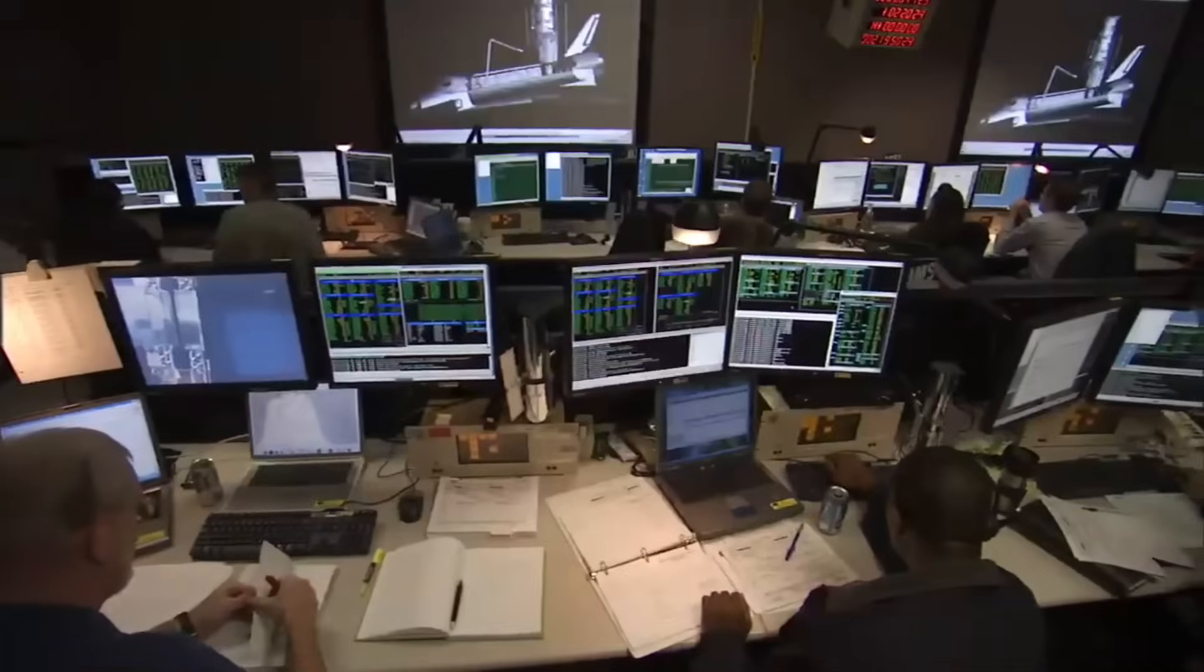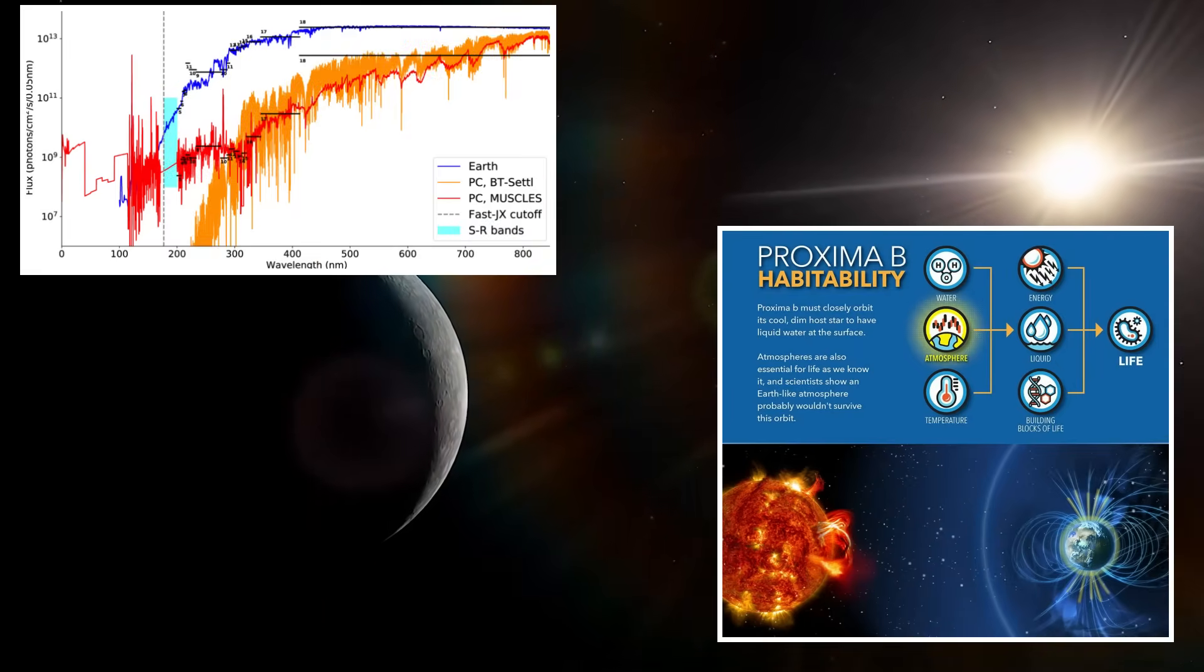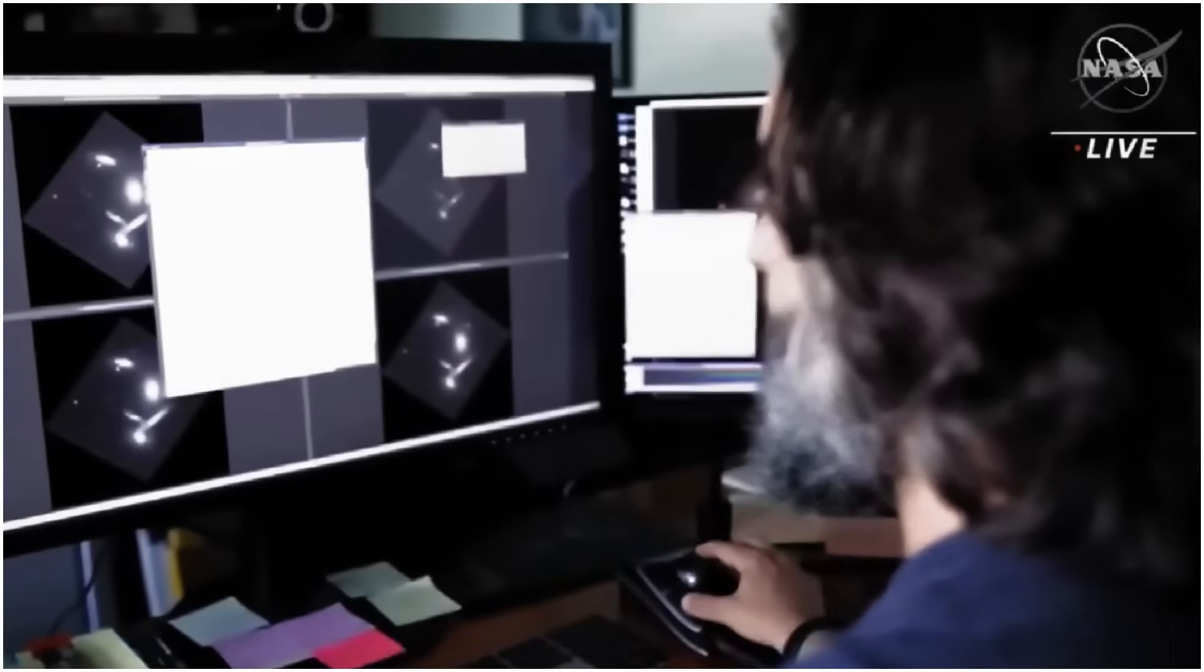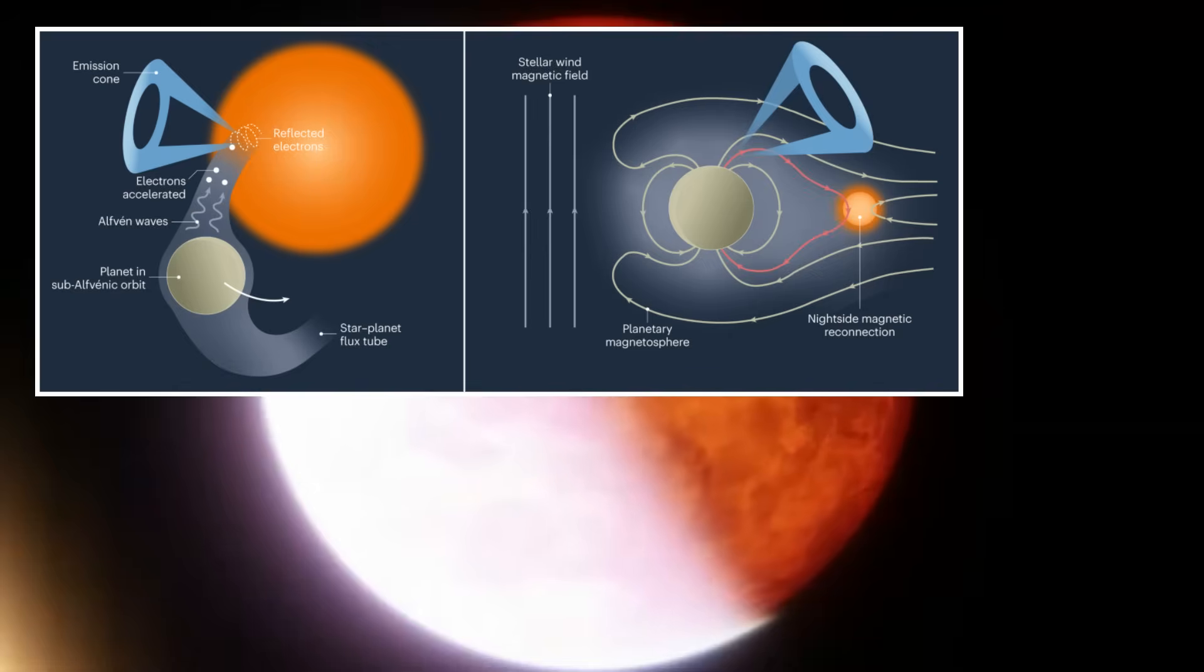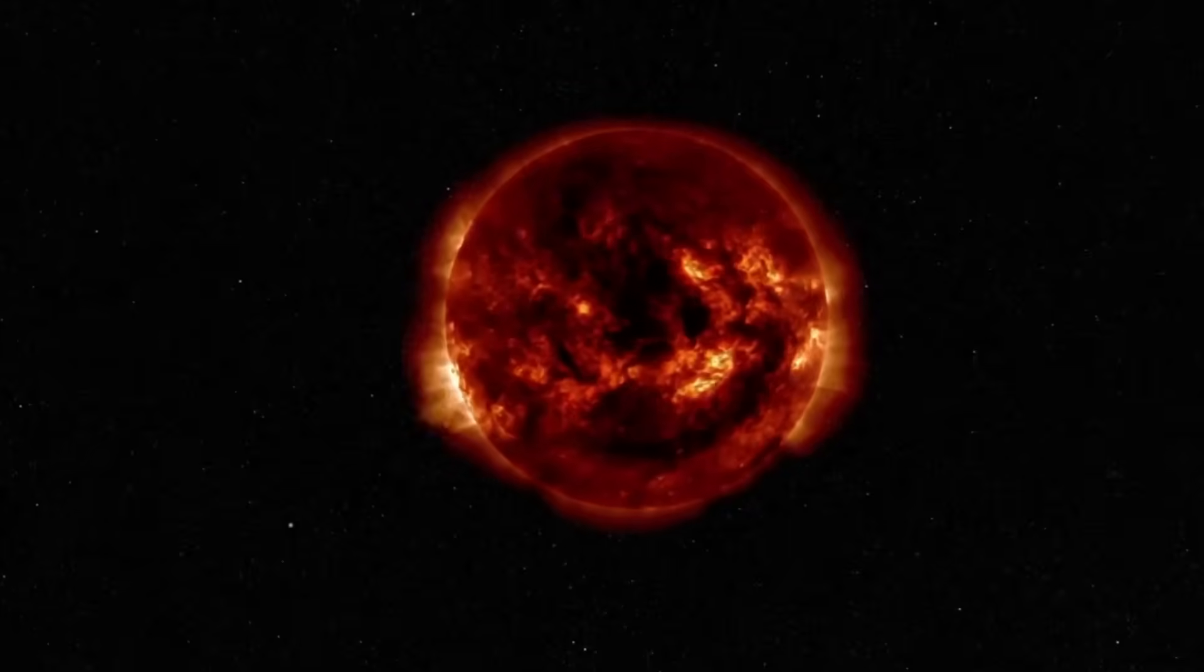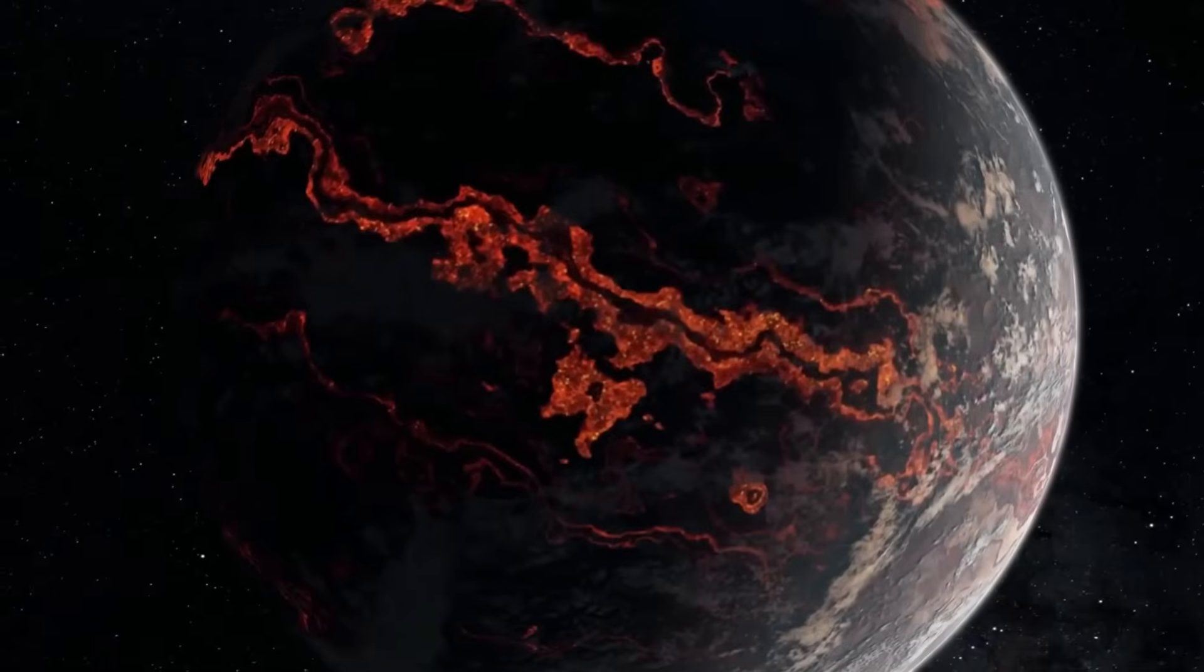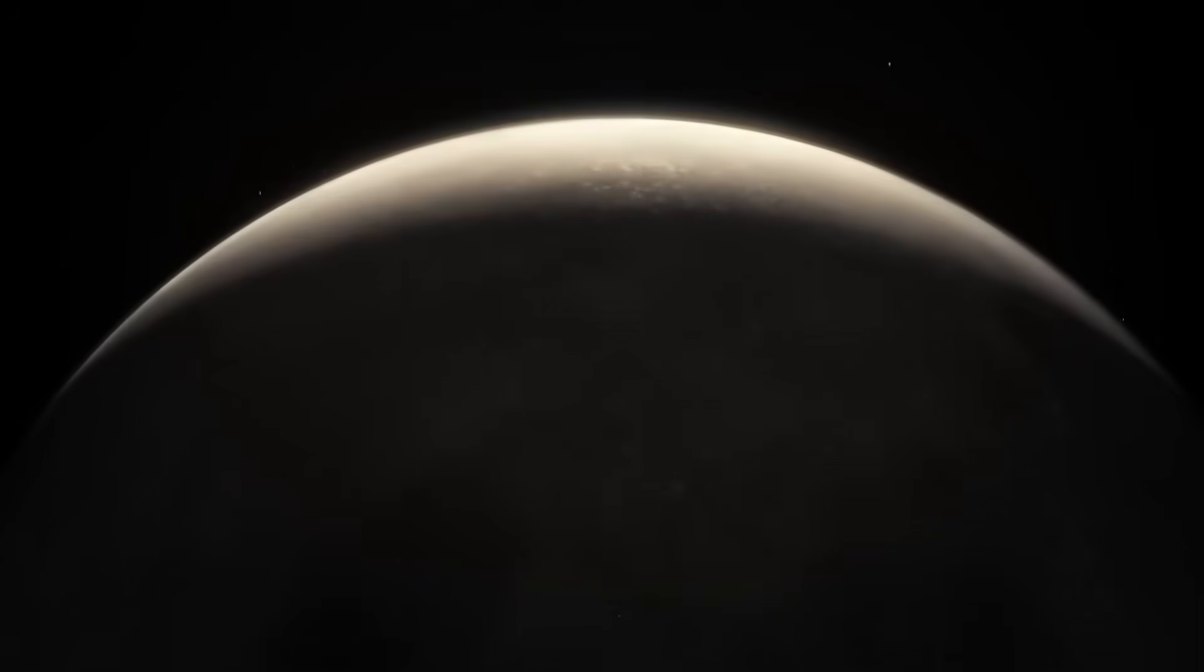Astronomers have been studying Proxima b for years, searching for signs of geological activity, atmospheric composition, and potential surface features, but nothing could have prepared them for this. Using a combination of infrared telescopes and computational models, researchers have identified a large-scale anomaly on the planet's surface, an irregular formation with a thermal and reflective signature that stands apart from the surrounding terrain. This anomaly is not a simple surface variation. Its heat retention properties and light reflection patterns are significantly different from what would be expected of a rocky exoplanet orbiting a red dwarf star. The structure appears to absorb and emit heat in an unusual manner, and its reflectivity suggests a composition that does not match typical planetary geology.